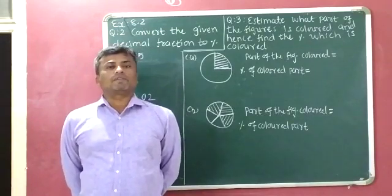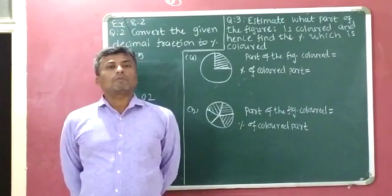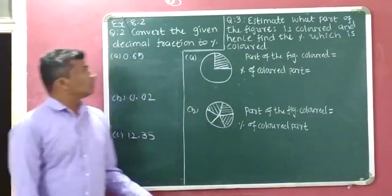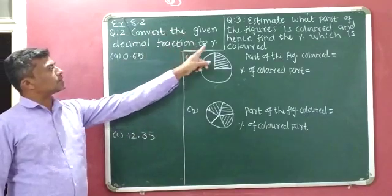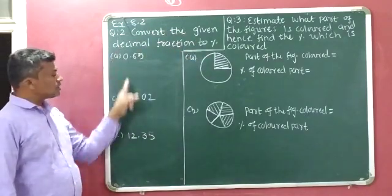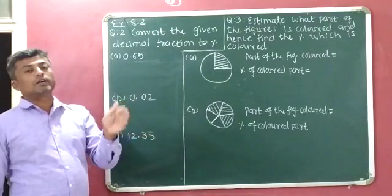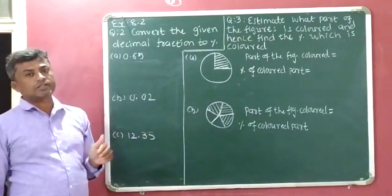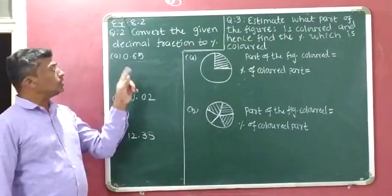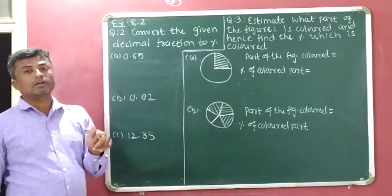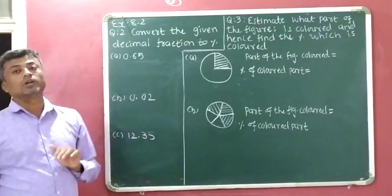Good morning students. Today we will discuss question number 2 and question number 3 of exercise 8.2. Question number 2: convert the given decimal fraction to percentage. Decimal numbers are given to us and we will convert them into percentage. If we multiply a decimal number with 100%, then the decimal number converts into percentage.